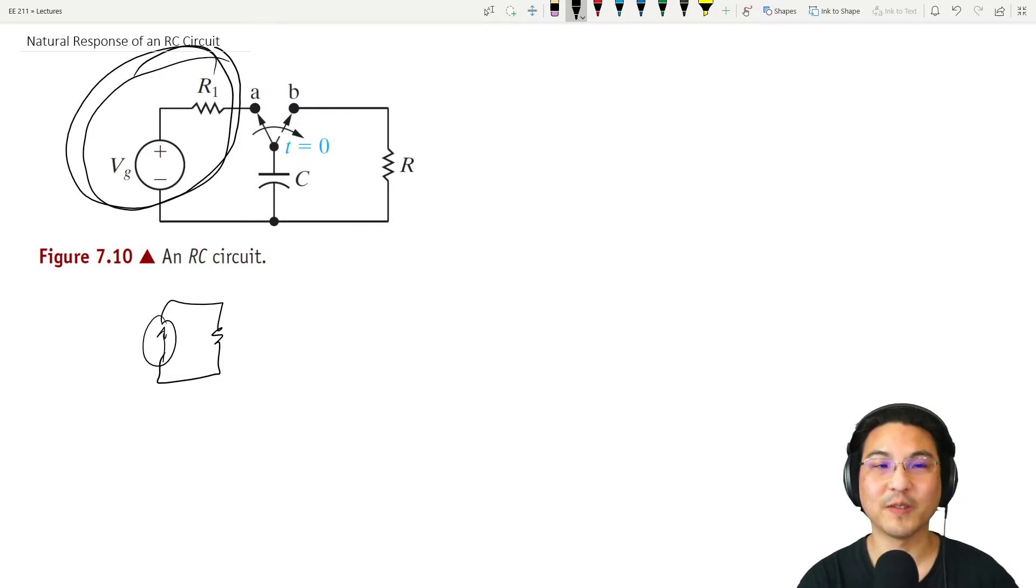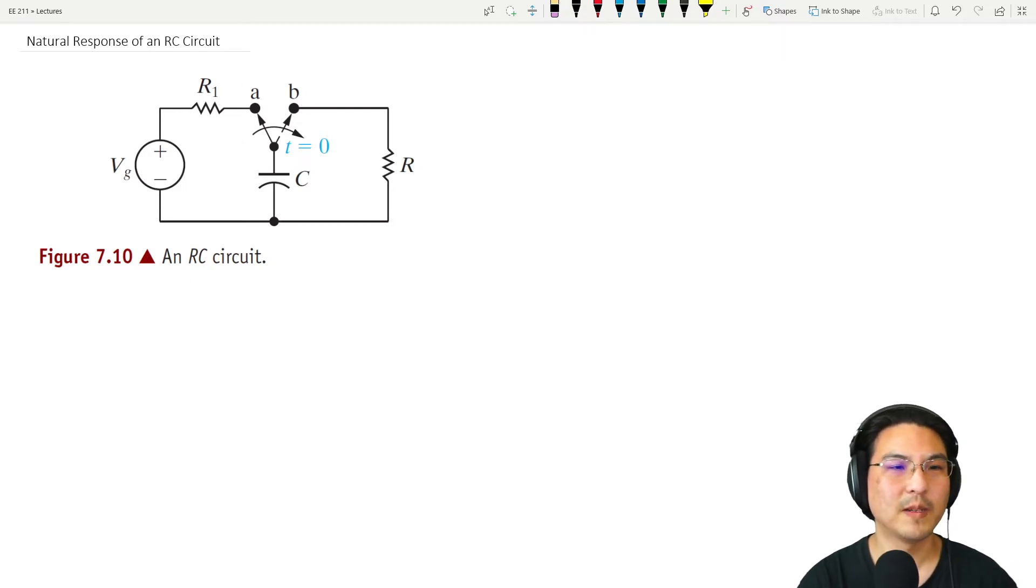If the switch is in this position here and if you wait a long time, like greater than five time constants, then everything is constant. The voltage everywhere is constant, the current is constant. What happens when you have constant voltage across a capacitor? What's the current going through a capacitor like this?